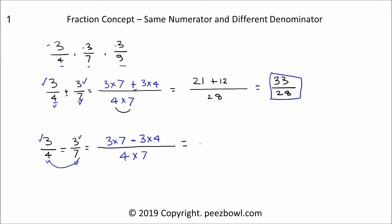This is equal to 3 multiplied by 7 is 21, minus 3 multiplied by 4 is 12, divided by 4 multiplied by 7 is 28. This is equal to 9 upon 28.